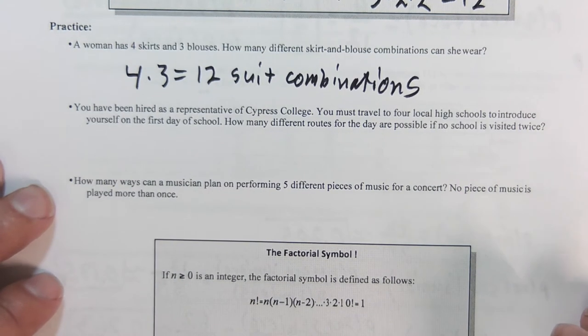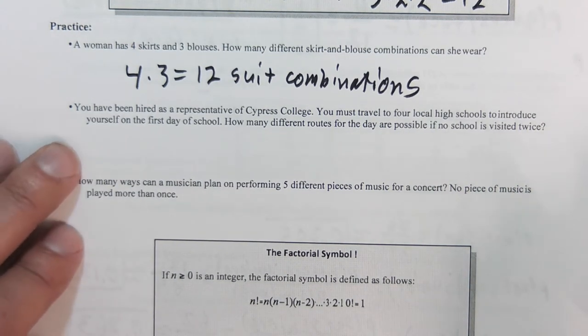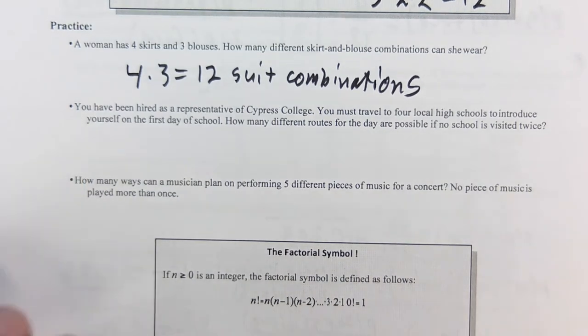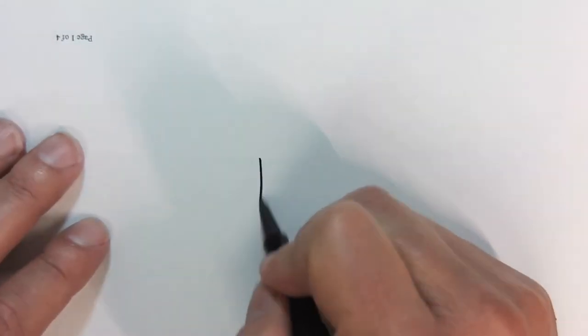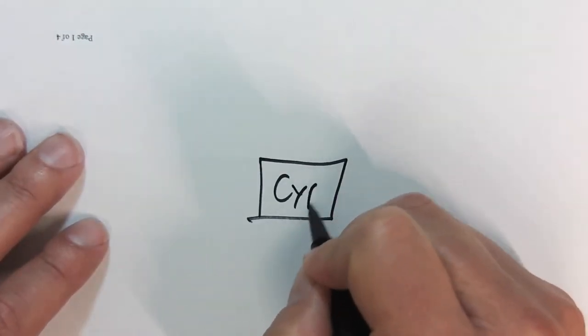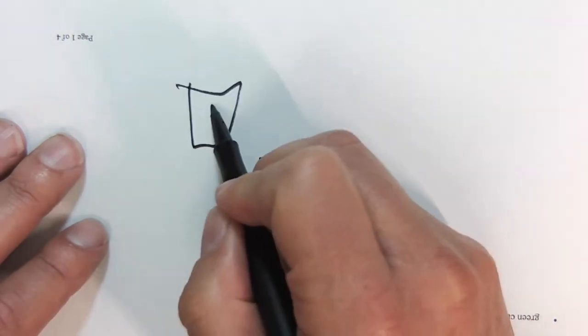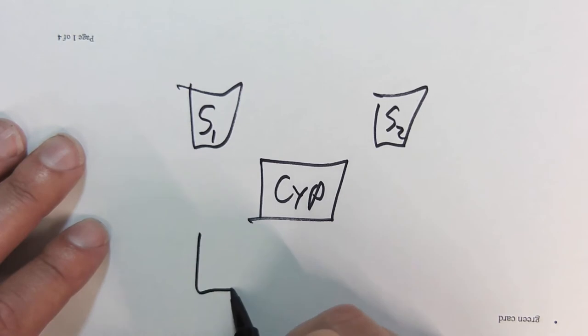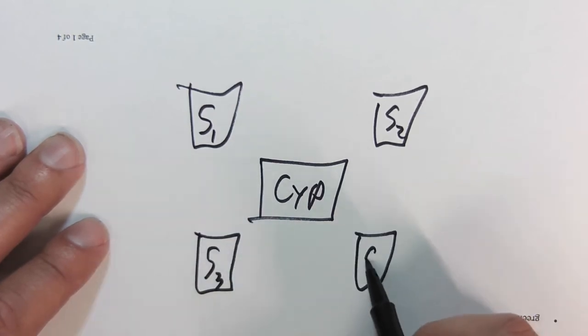You've been hired as a representative of Cypress College. You must travel to four local high schools to introduce yourself on the first day of school. I'm going to draw this one out for a second. So here's Cypress College, and we have school one, school two, school three, and school four.